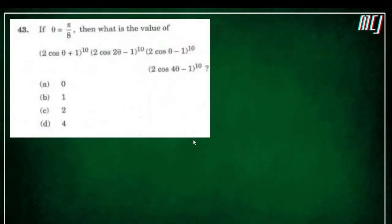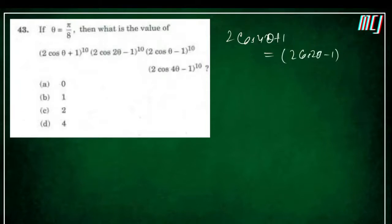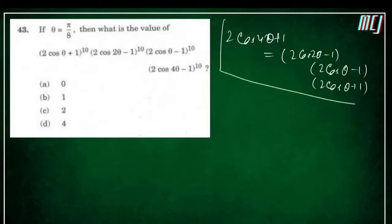Next question has a trick. The important formula to remember is: 2cos4θ + 1 = (2cos2θ − 1)(2cosθ − 1)(2cosθ + 1).